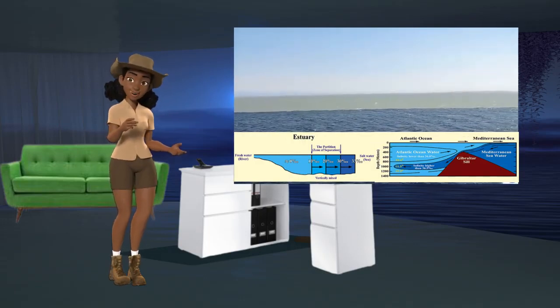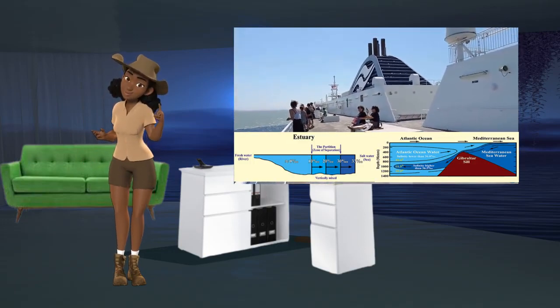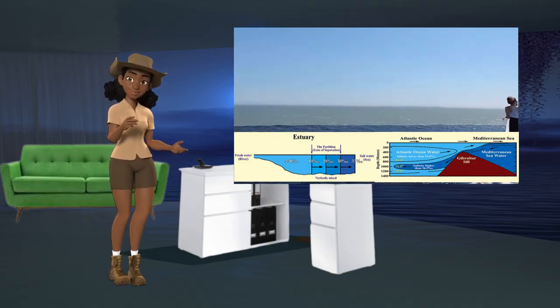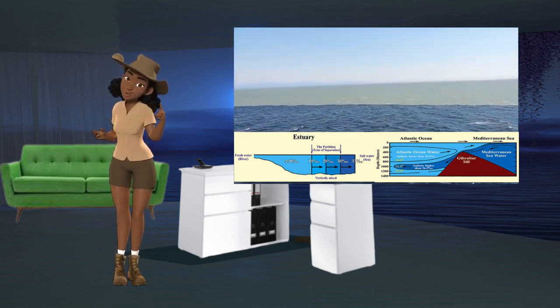When Mediterranean seawater enters the Atlantic over the Gibraltar Sill, it moves several hundred kilometers into the Atlantic at a depth of about 1,000 meters with its own warm, saline, and less dense characteristics. The Mediterranean water stabilizes at this depth.